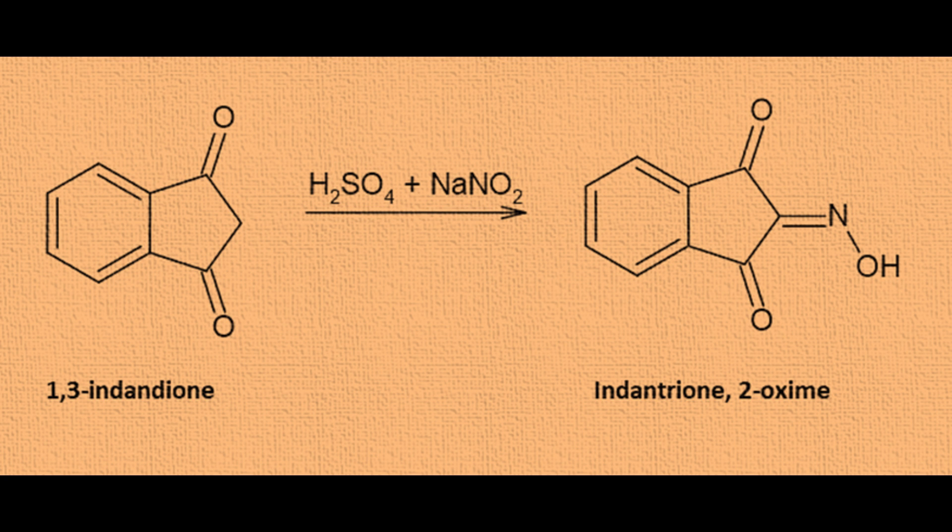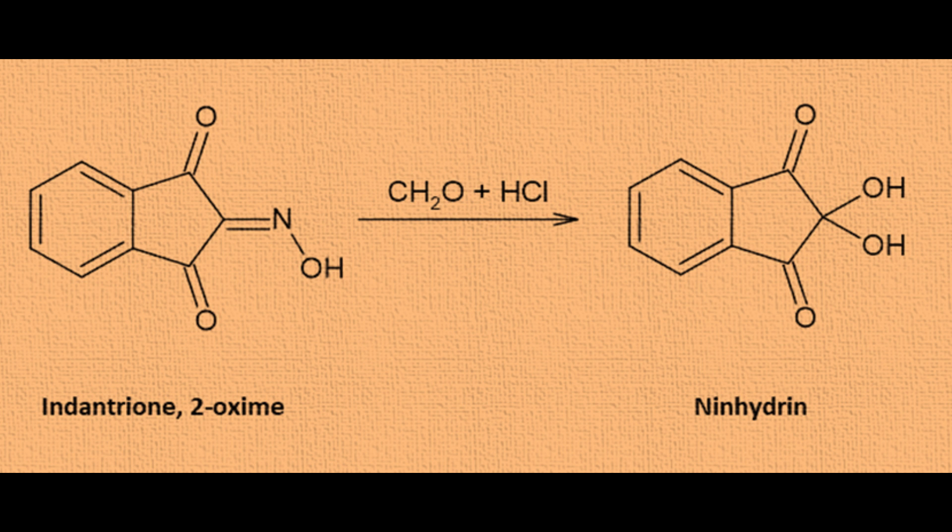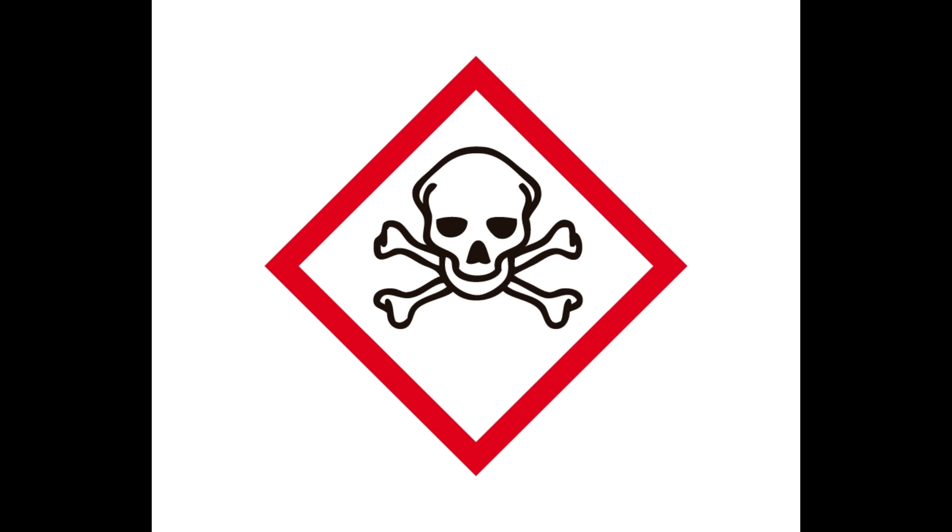In the first step, 1,3-indanedione is reacted with nitrous acid. In the second reaction, ninhydrin is obtained by reacting the product formed with formaldehyde and mineral acid. In this operation, we will be careful since formaldehyde and 1,3-indanedione are very toxic products.